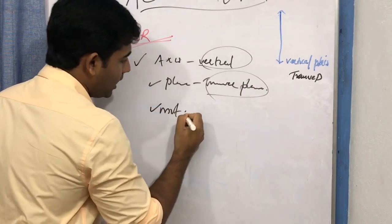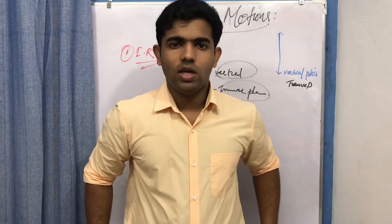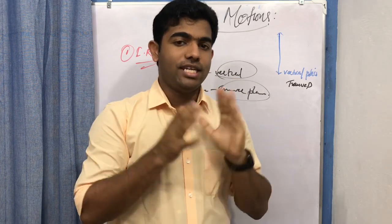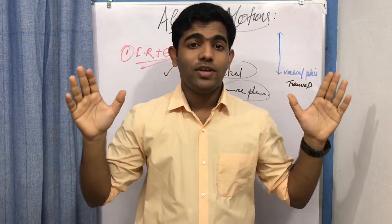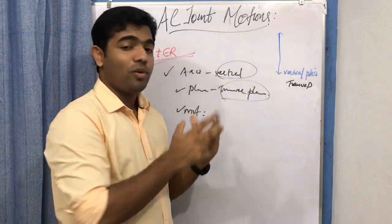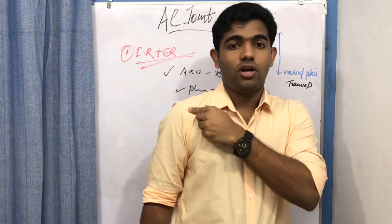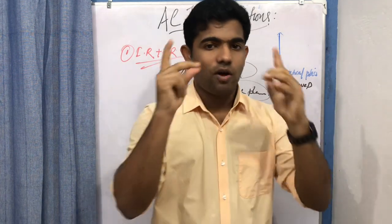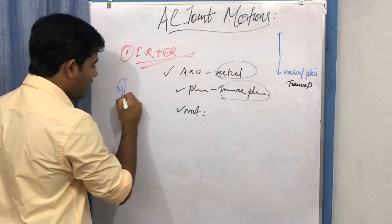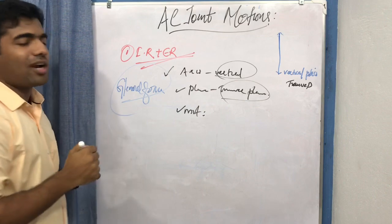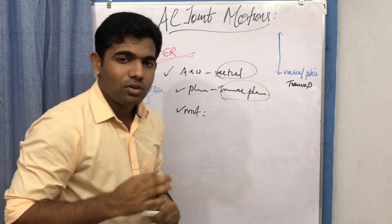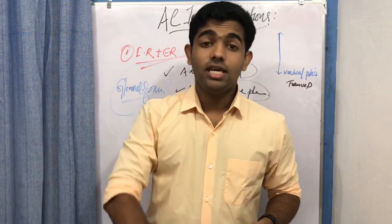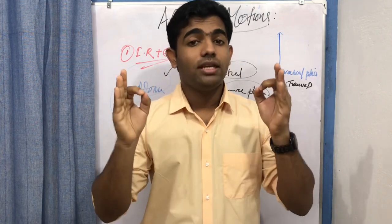For understanding sternoclavicular movement we used the lateral end of the clavicle as a reference point. For the acromioclavicular joint, the reference point is the glenoid fossa of the scapula. You cannot identify the movement just at the joint axis, so you need this reference point. Remember: the glenoid fossa of the scapula is your reference point throughout the motions of the acromioclavicular joint.